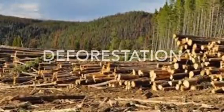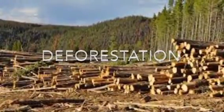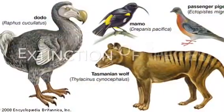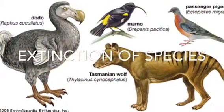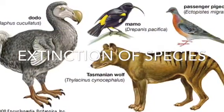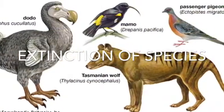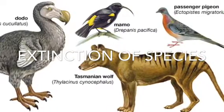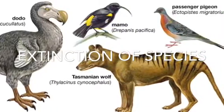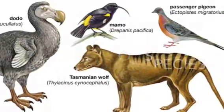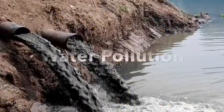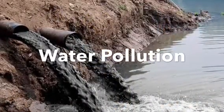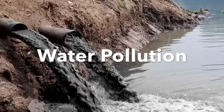Deforestation is when too many trees are cut out of the forest. Here's an example of some species that used to live but now are extinct today due to over poaching and overuse of these animals. Water pollution is another example of overly using our resources.